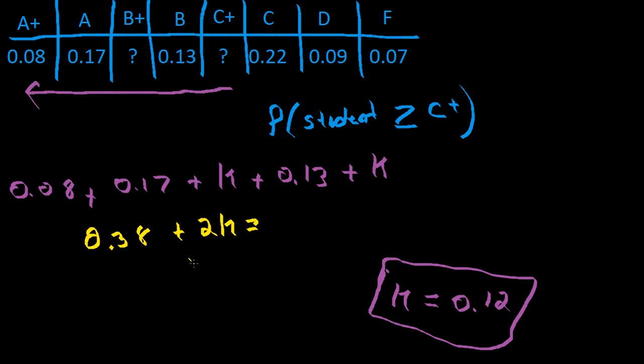Now that we know the K value, it's going to be 2 multiplies 0.12 add 0.38 is going to be equaling our answer. And if you actually did the calculation, you would get 0.62. And that is the probability of a student getting something that's equal to C or greater.